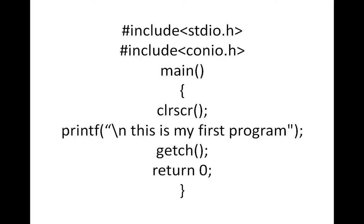Next, getch. This is a function which is defined in the console input output header file. The purpose of this getch function is — whenever you want to see the output screen — we use getch to wait for data from the keyboard, so that we can see the output.